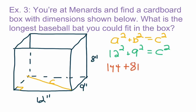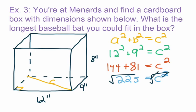12 squared is 144 and 9 squared is 81, so 144 plus 81 equals C squared. Adding those gives us 225 equals C squared. Taking the square root of both sides — the square root of 225 is 15, which is a perfect square you should know. So the diagonal of the bottom of the box is 15 inches. I'll now replace the label C with 15 inches on our diagram.